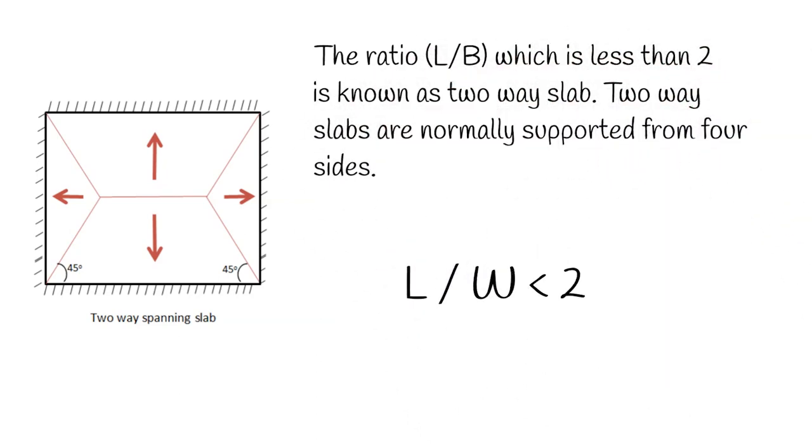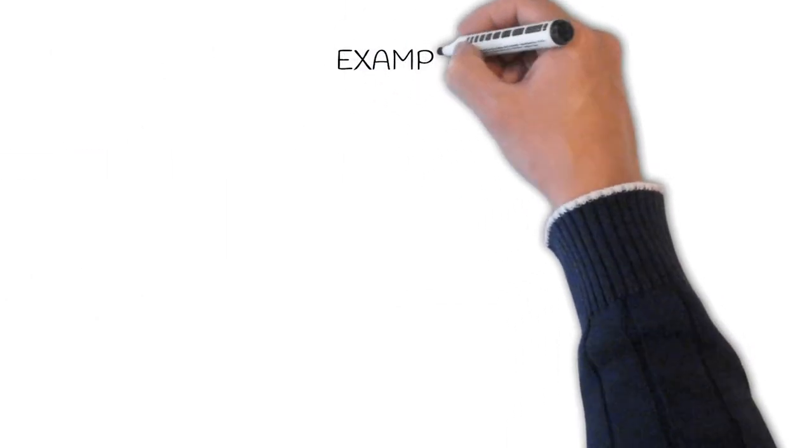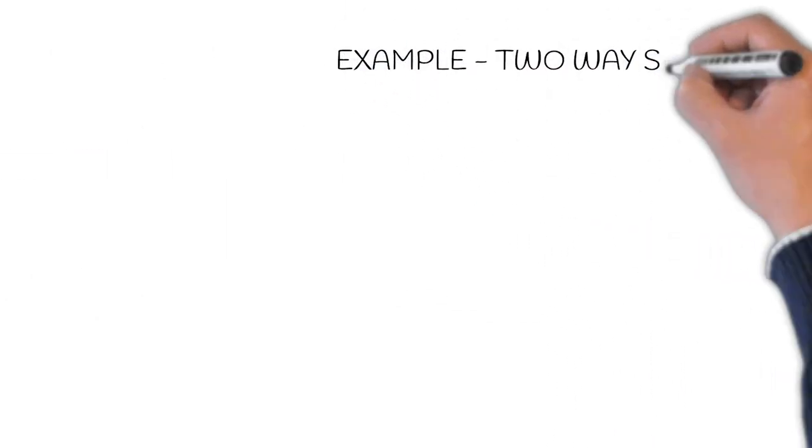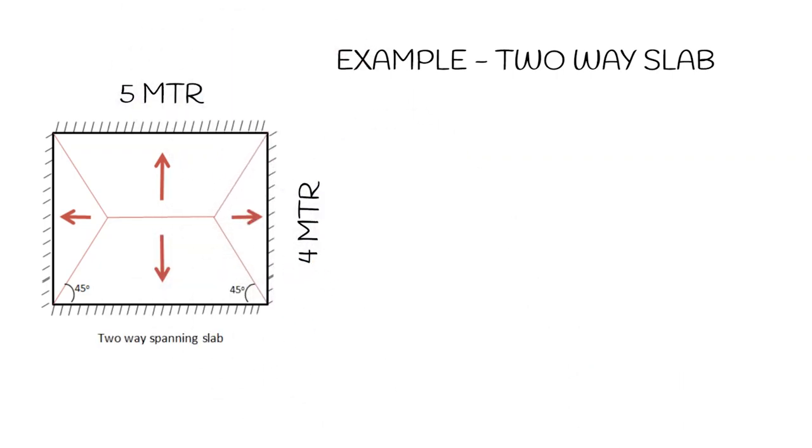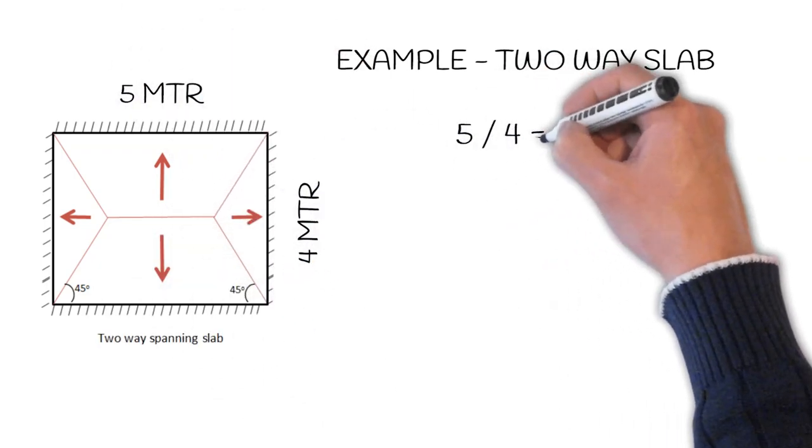Let us understand it with an example. Take a slab 5 meter by 4 meter, where 5 meter is longer span and 4 meter is shorter span. So 5 divided by 4 is 1.25, which is less than 2, so it will be considered as two-way slab.